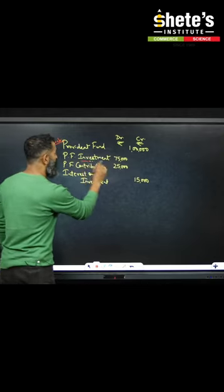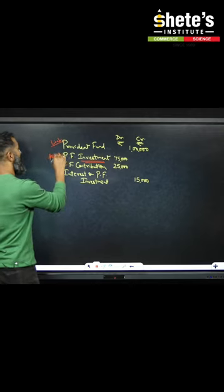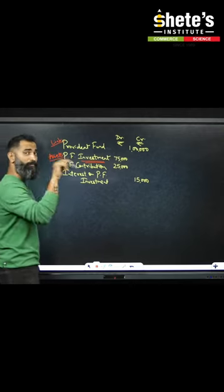Now, investment - if you understand the name of this investment balance sheet, it will go to the asset side because it's called investment company.